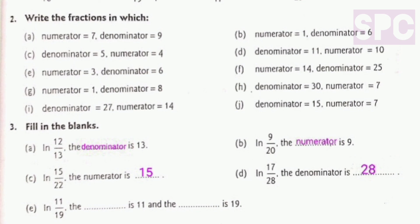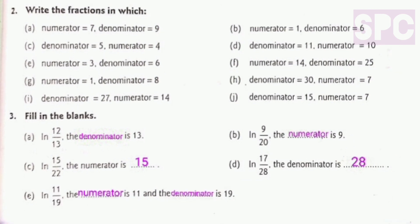Part D, in 17 by 28, the denominator is blank — so the denominator is 28. Part E, the blank is 11 and the blank is 19. So in this fraction, 11 is the numerator and 19 is the denominator. In the first blank we will write numerator — numerator is 11 — and in the second blank we will write denominator — denominator is 19.